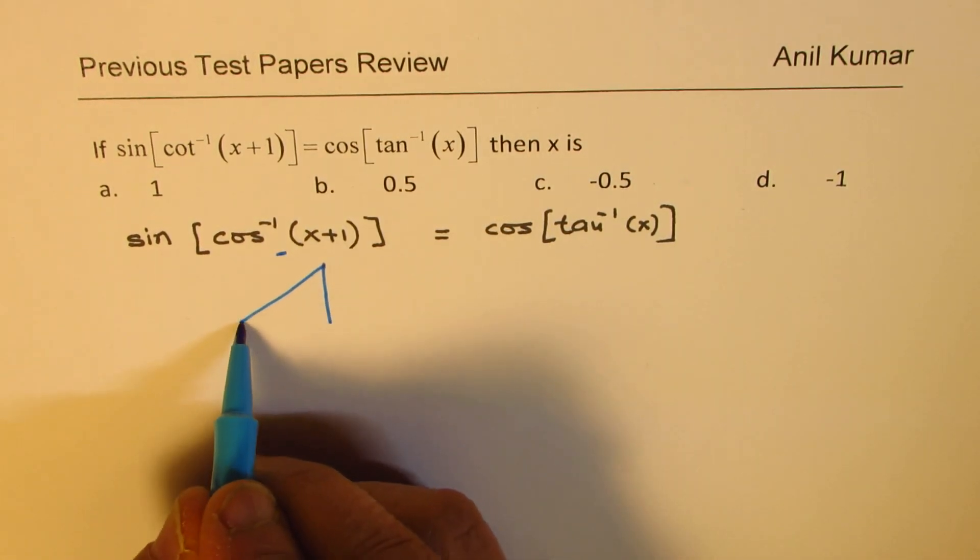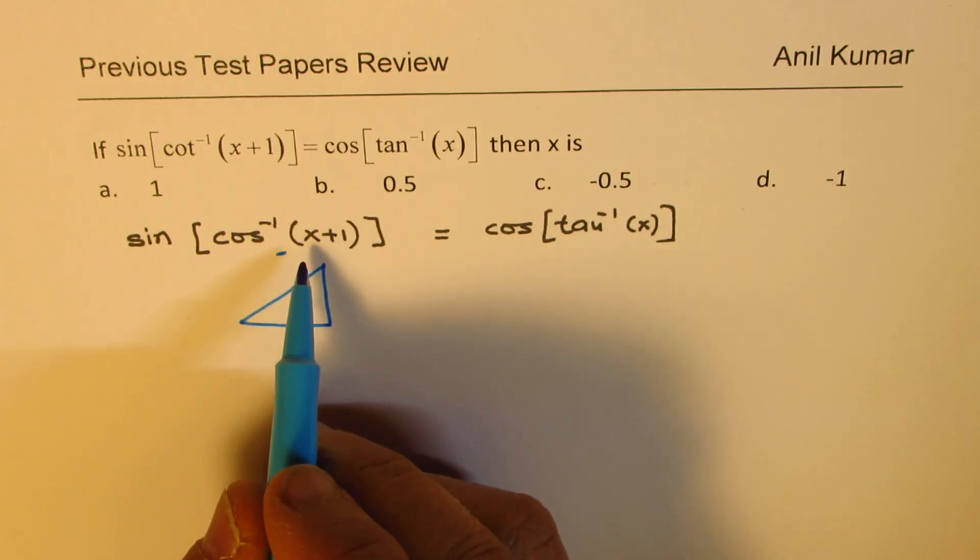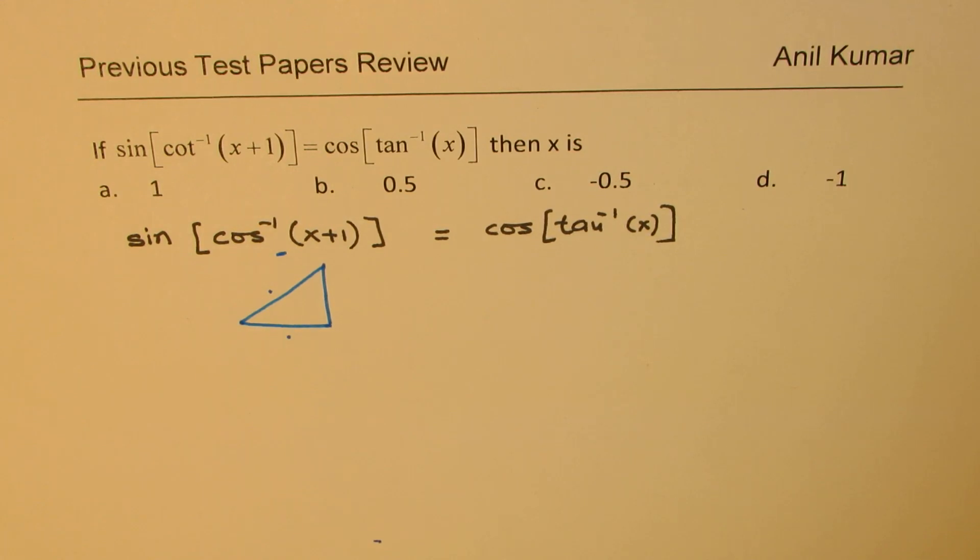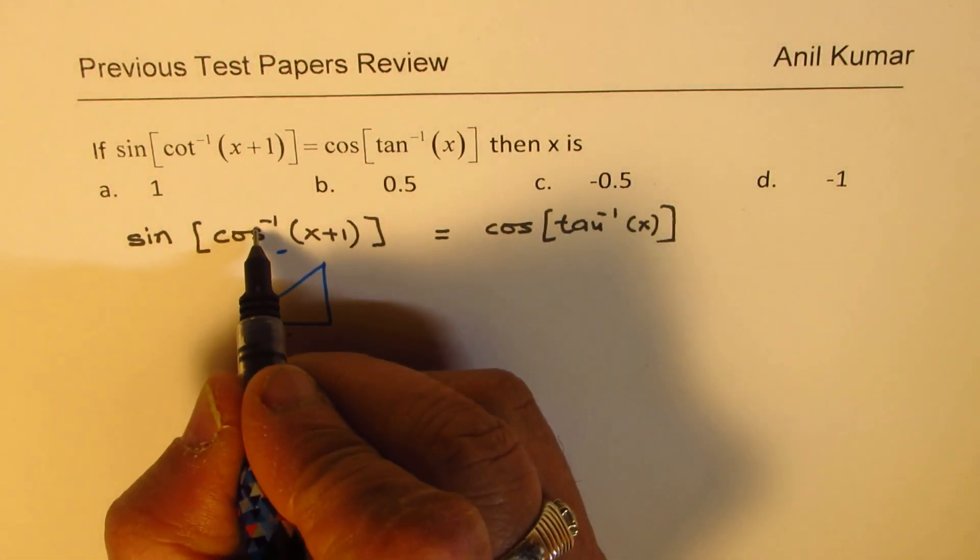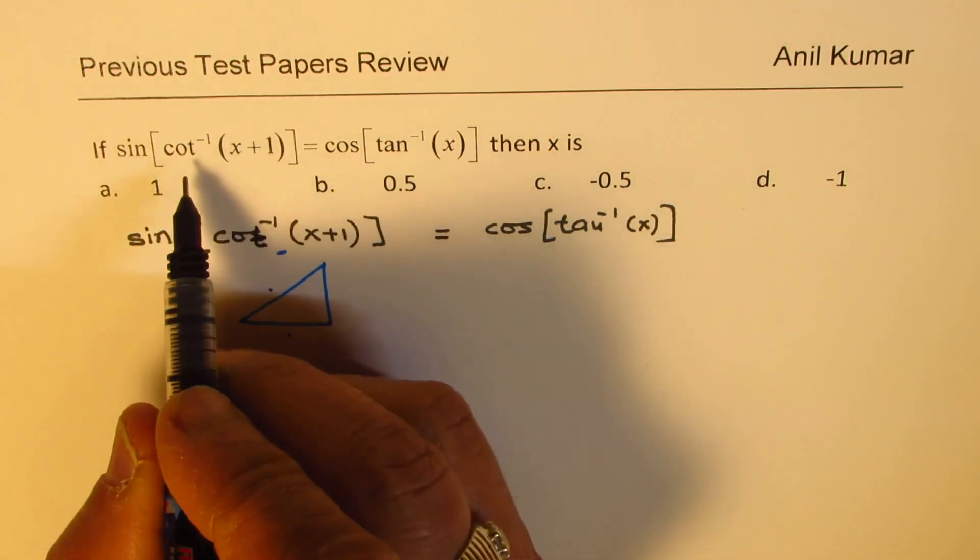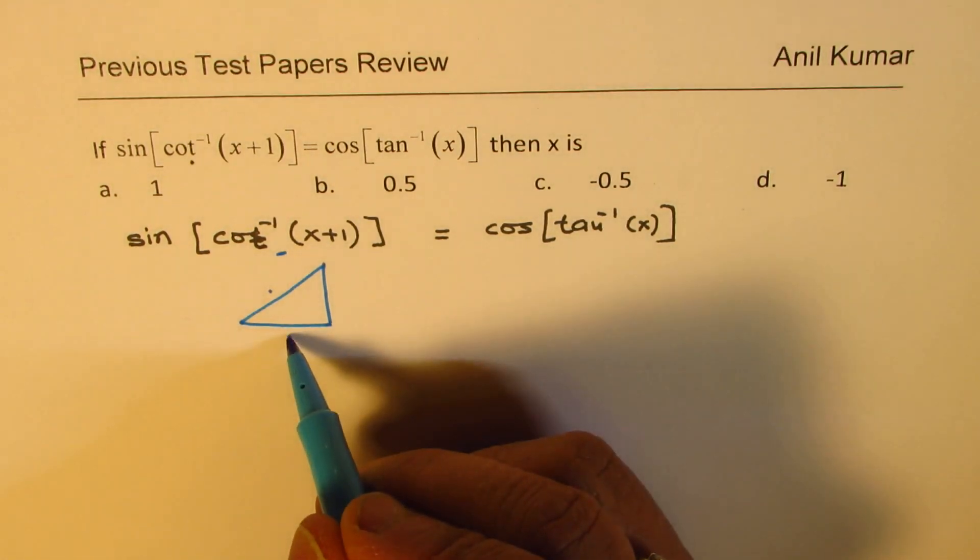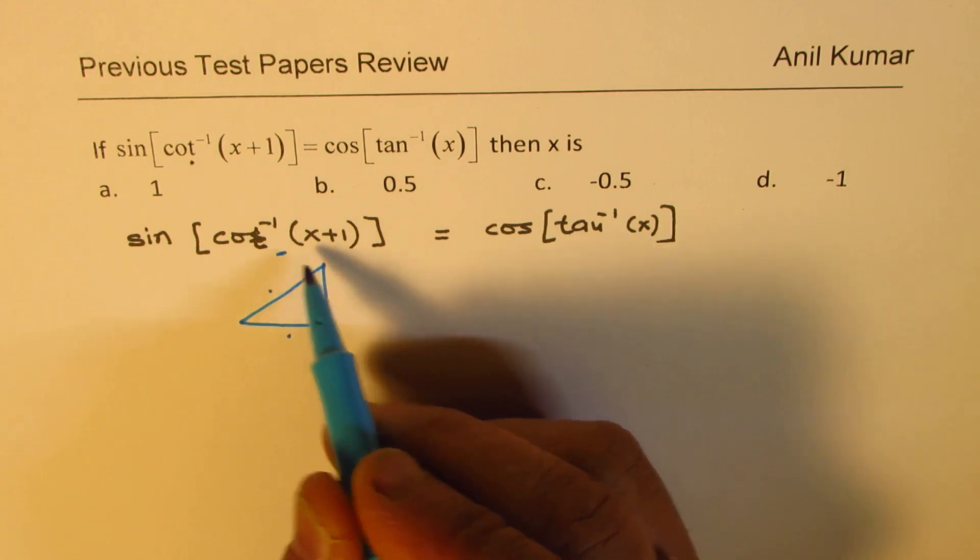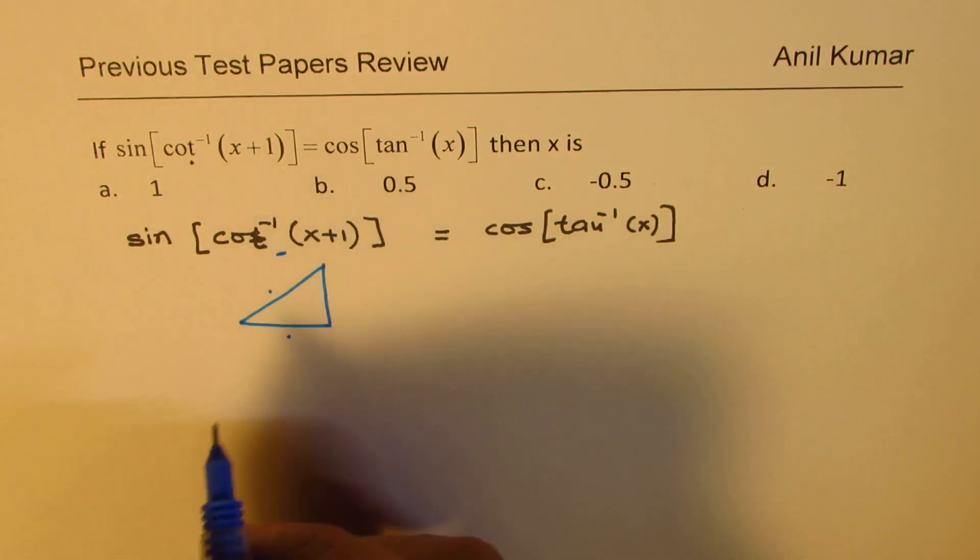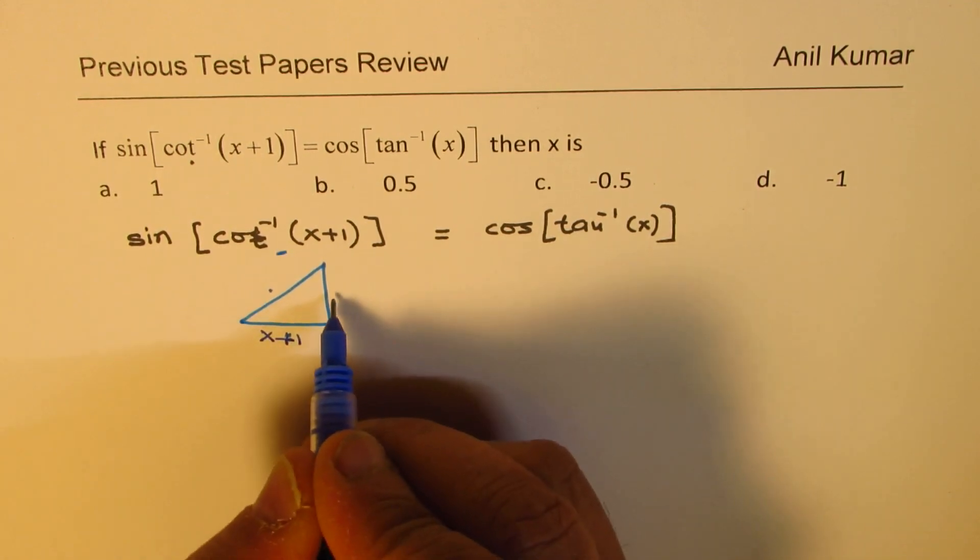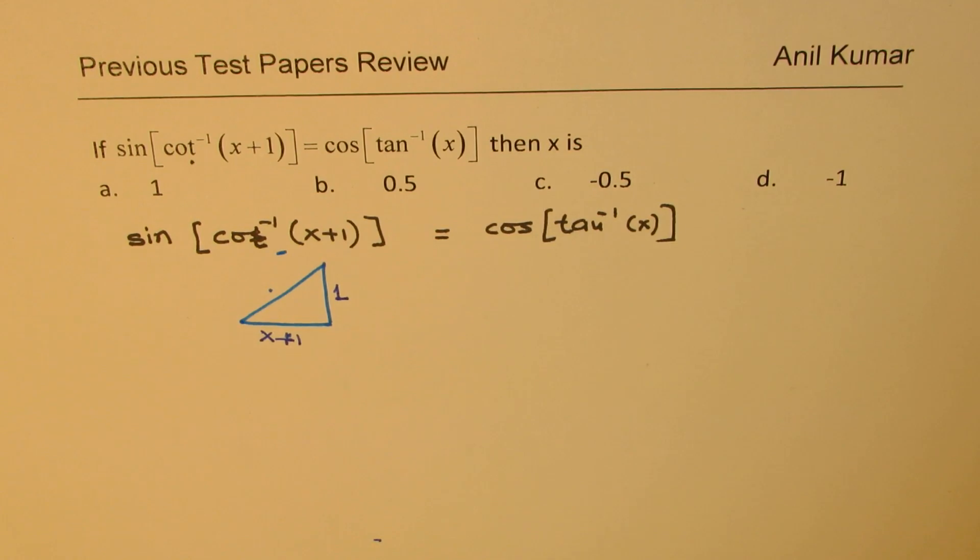When we say cot inverse—sorry, I said cos inverse wrong—cot inverse means the ratio of base to opposite side. So if it is cot inverse, then the ratio of base to the opposite side is cot inverse. Let us rewrite these sides. They will be (x plus 1) and 1. So that becomes the sides of the triangle.